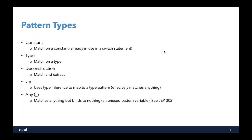There are a number of different pattern types. The first is the constant pattern type, where we match on a constant. This has already been used in Java — if you look at the switch statement, you can do things like case one, case two. That's essentially constant pattern matching. Since we have a constant, we don't have a pattern variable because we know what the value is — we know it's one, we know it's two.